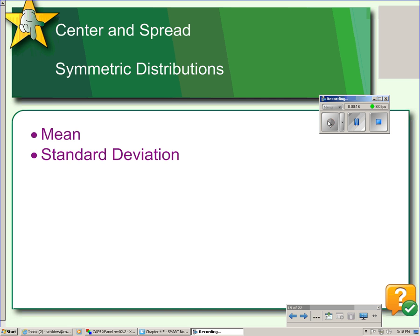When a distribution is skewed, the median and IQR are the best ways to describe the center and spread, since they are resistant measures to outliers.